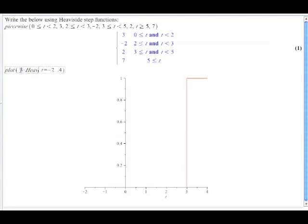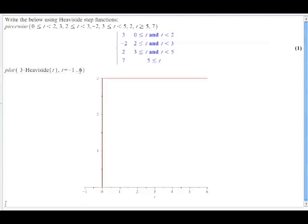First, we're going to go 3 times the Heaviside of t. Let's plot this between, let's say negative 1 and positive 6. Okay, this is great. Notice that at 0, our switch turns on, and we're at height 3.